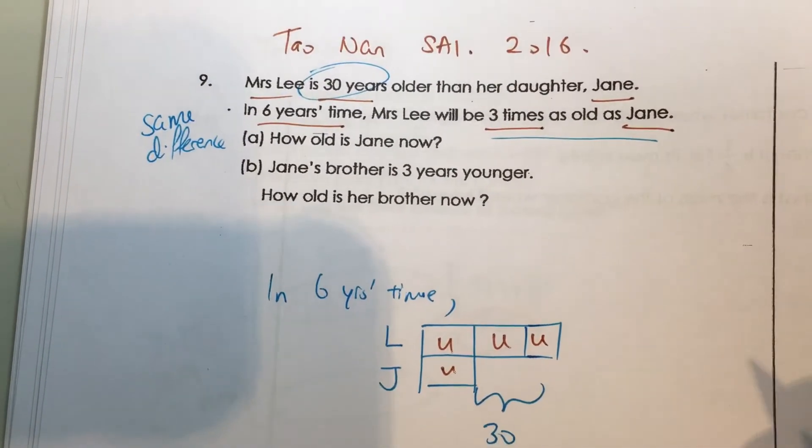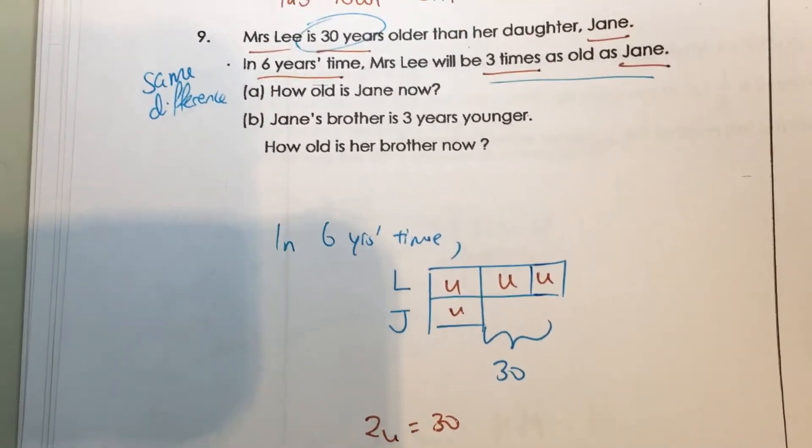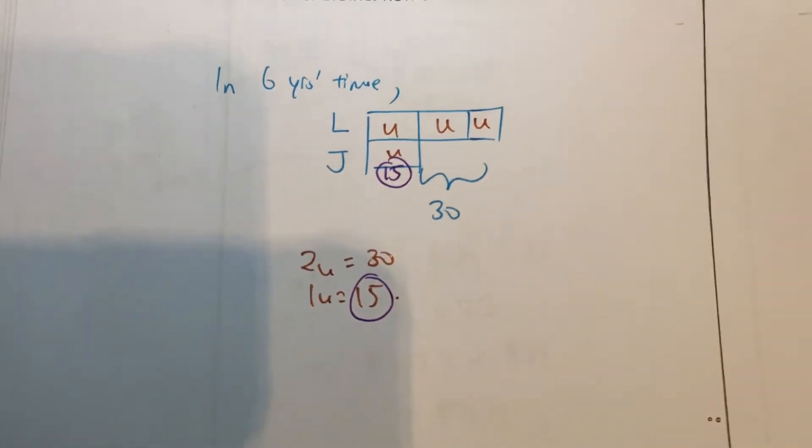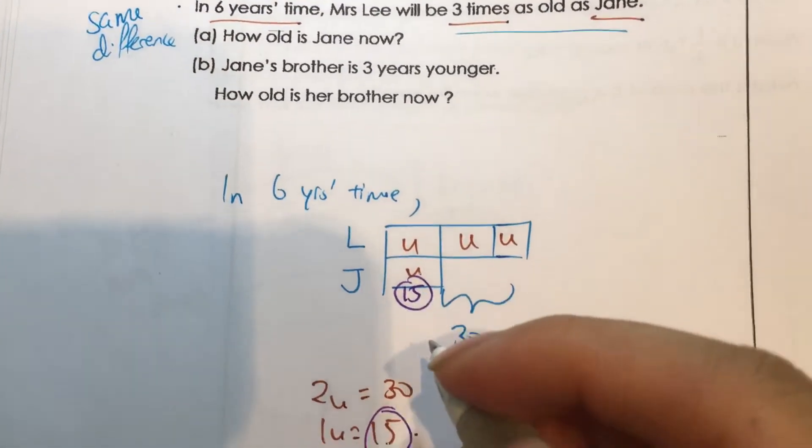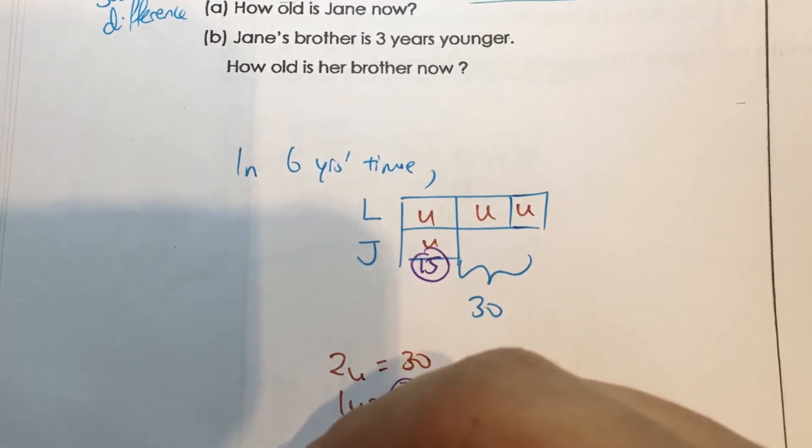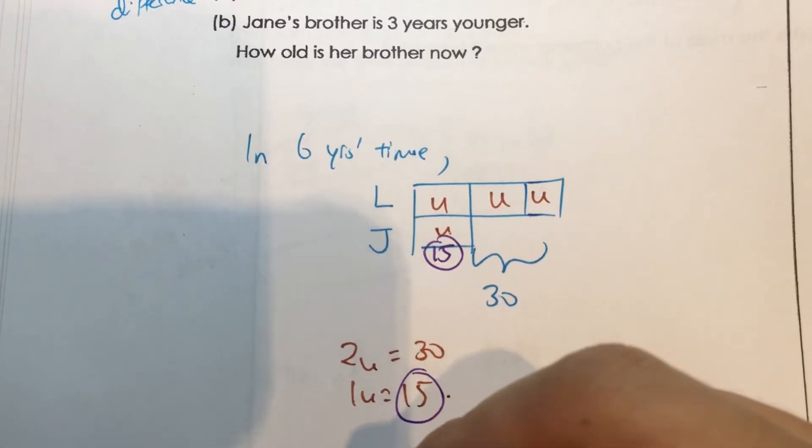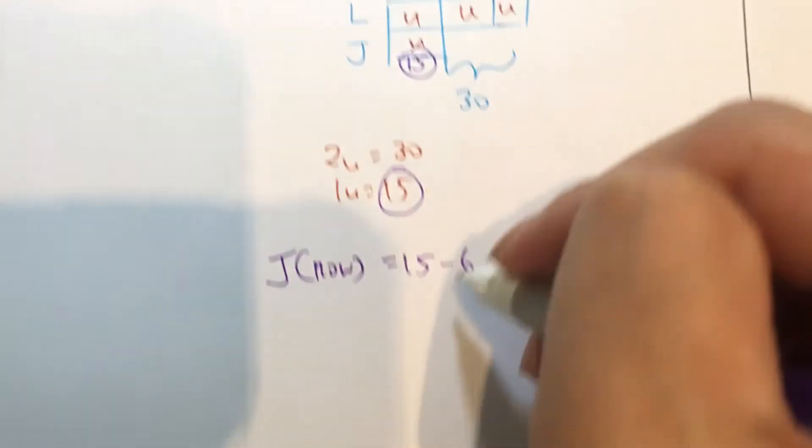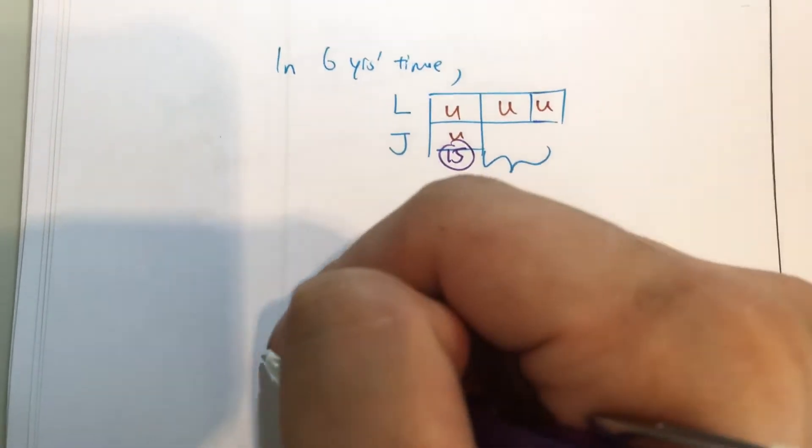So how old is Jane now? This tells me that Jane, in 6 years time, will be 15. So Jane now is 15 minus 6, which is 9. So this is part A.